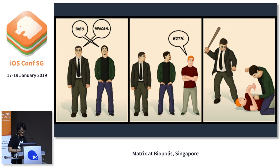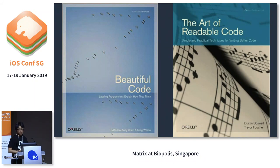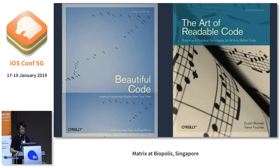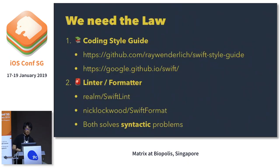Let's think about why we care about coding styles, even tiny things like thousands of spaces. I think it's because Swift is a beautiful language, and we want to write beautiful code on top of it. We want to write consistent code, readable code, so that everyone in the team can read it and feel comfortable to write it. So to keep our code consistent, we need some rules to unify our different styles.